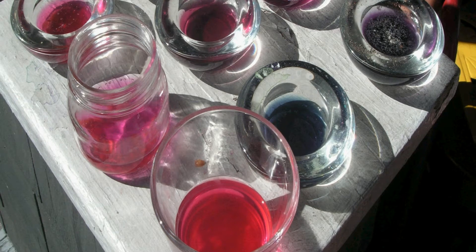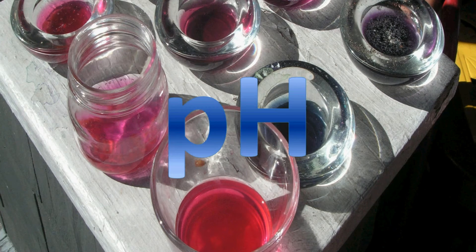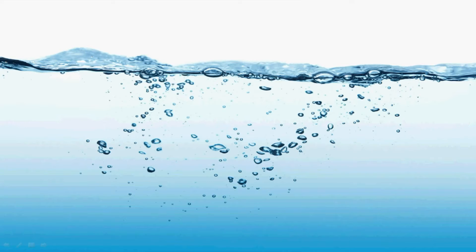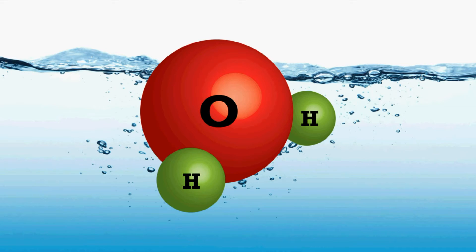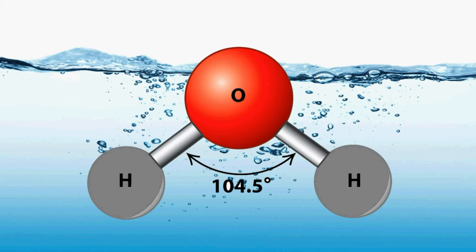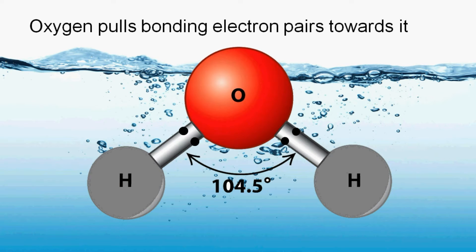To understand pH, we have to understand why the pH of water is 7. This is a water molecule: hydrogen and oxygen sharing an electron to form a covalent bond. But oxygen is very electronegative, so it pulls that bonding electron towards it.